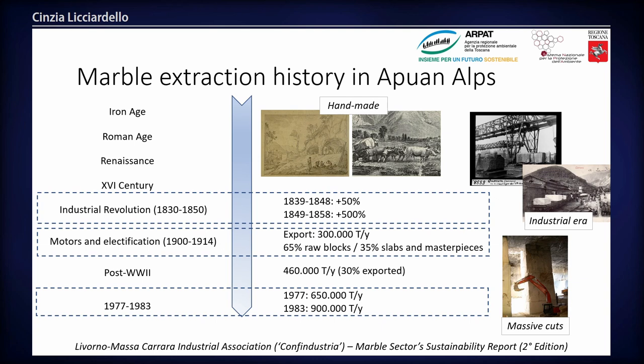The Apuan Alps are a big extractive basin. Since the Iron Age, marble was extracted in this area, and the big changes arose in the first years of the 18th century with a dramatic increase in marble production.